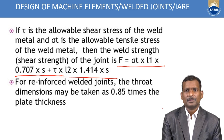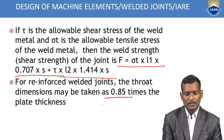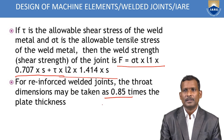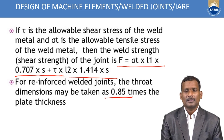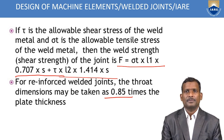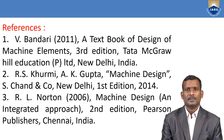For reinforced weld joints, you may take 0.85 times of the plate thickness. These are the references.